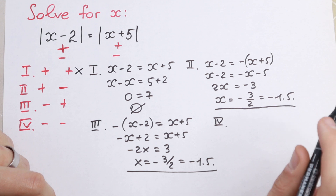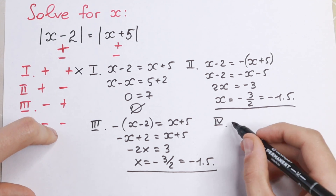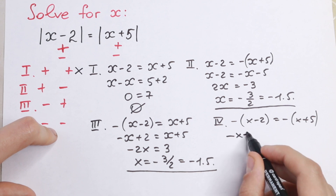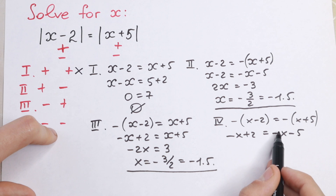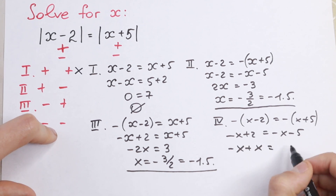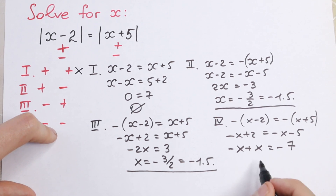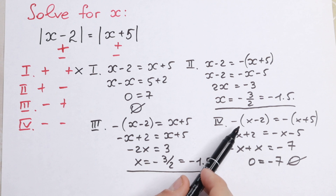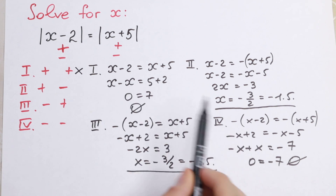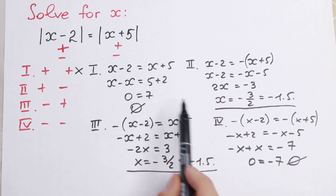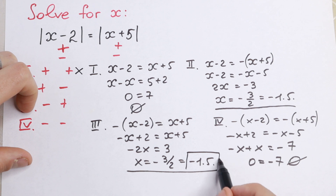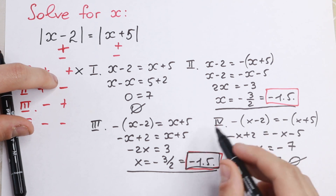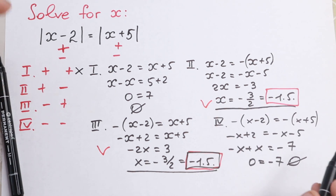The fourth case will not give us any roots, because if we have two minuses, we will have minus parentheses x minus 2, equal to minus parentheses x plus 5. Opening parentheses: minus x plus 2 equals minus x minus 5. Bringing x to the left: minus x plus x equals 0, so 0 equals minus 7, which has no roots. As you can see, cases one and four give no roots, and cases two and three give the same root — meaning we solved this correctly and have only one root.